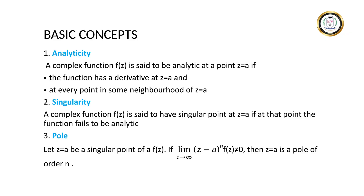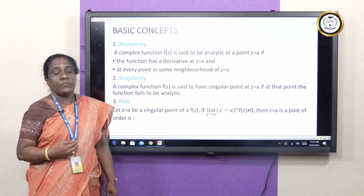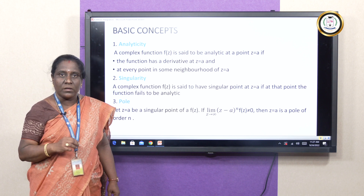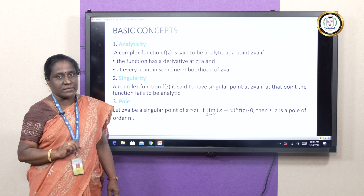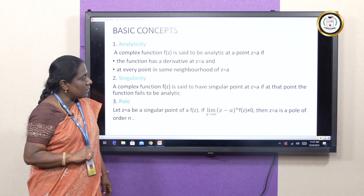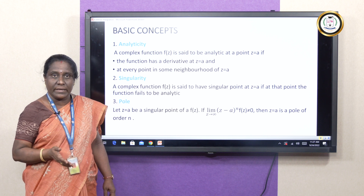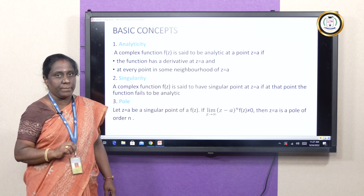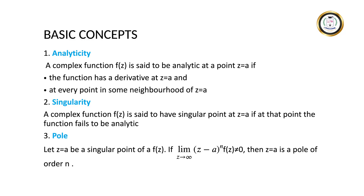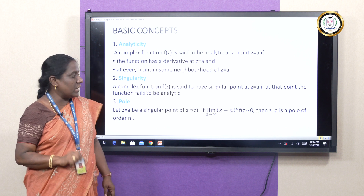The third definition is pole. A singular point is called a pole only when the condition — limit z tending to a of (z − a)^n · f(z) ≠ 0 — is satisfied. If this condition is satisfied, then z = a is called a pole of order n. If n = 1, it is called a simple pole; if n = 2, it is called a bipole or pole of order 2, and so on.